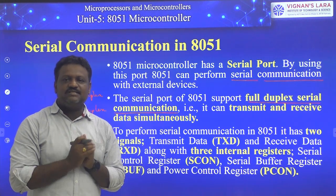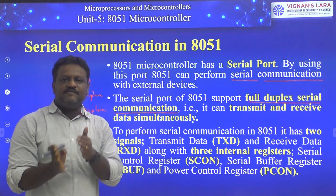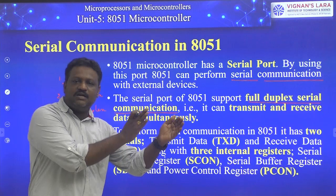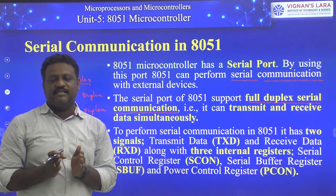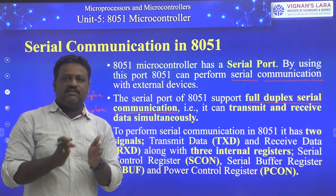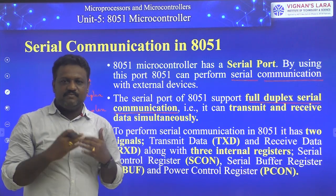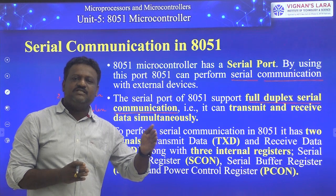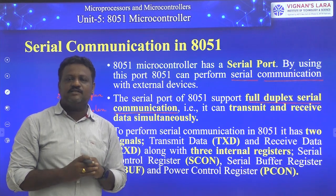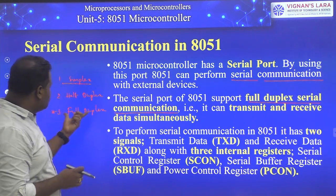Half duplex means communication is done in both directions between two stations, but it is not simultaneous. For example, when station one transfers data to station two, station two only receives and can't transfer data back. In some other time, when station two transfers data to station one, station one can't transfer data simultaneously. That is what we call half duplex.